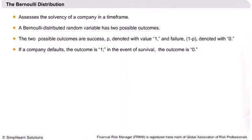Bernoulli Distribution. This distribution represents the success probability as P and the failure probability as Q equals 1 minus P with a value of 0. The Bernoulli Distribution is calculated to evaluate the probability of whether a company will default or survive in a given time.